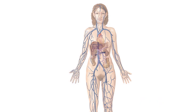As you're probably already aware, the veins of the body form a complex network that transports deoxygenated blood from the tissues of the body back to the heart. This network is so complex and variable that it can be tricky to learn and recall the important veins and their anatomical locations within the body.